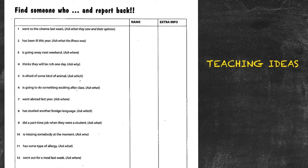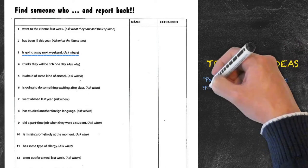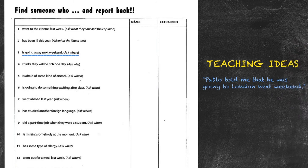At the end of the activity the key point here will be having the students report back the answers of what they previously got. In this situation we have the question find someone who is going away next weekend. Of course the question would have been in direct speech as well as the answer. Now we'll report back the answer such as something like Pablo told me that he was going to London next weekend.